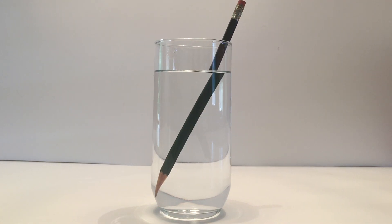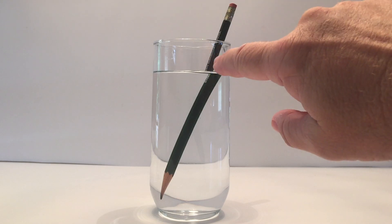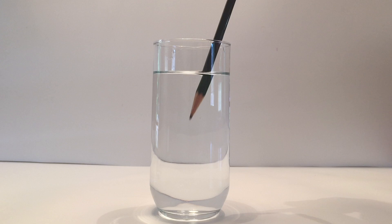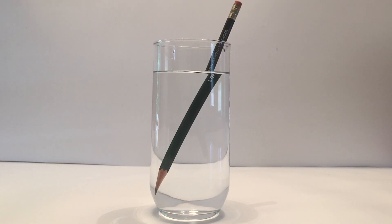The portion of the pencil above the water is shifted relative to the image viewed under the water. The bending of the path of the light as it passed through the water or air changes the observed image of the pencil.